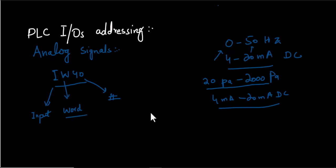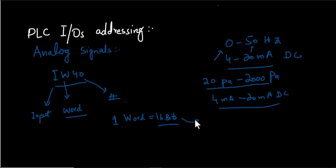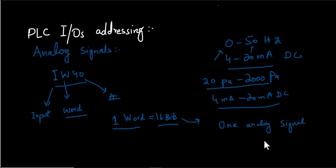A word, as we discussed in our PLC data types video, is comprised of 16 bits. Each analog input channel value — each analog signal in our PLC — is by convention represented by 16 bits. So if we have one word, it means we represent one analog value or analog sensor value. In other words, one word equals 16 bits, or one word equals two bytes.